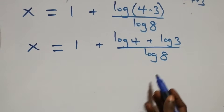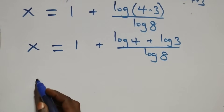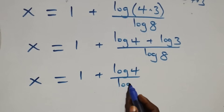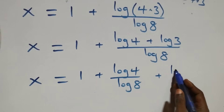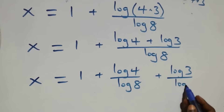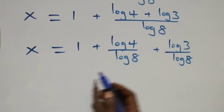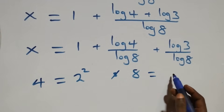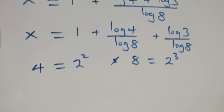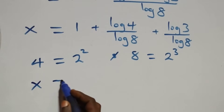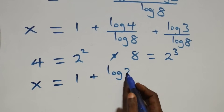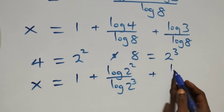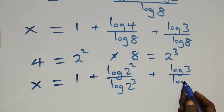We separate this into two fractions: x equals 1 plus log 4 over log 8 plus log 3 over log 8. We then write 4 as 2 squared and 8 as 2 cubed. So we have x equals 1 plus log(2²) over log(2³) plus log 3 over log(2³).